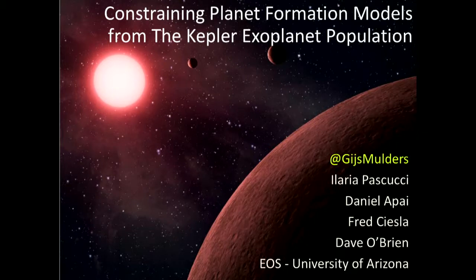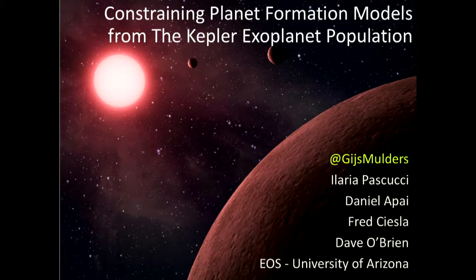Welcome everyone, also for the people coming in. My name is Gijs Mulders, I'm a postdoctoral researcher at the University of Arizona. Today I want to talk to you about the exoplanet populations discovered by the Kepler Space Telescope, how these exoplanet populations change our idea of what typical planetary systems look like, and how they force us to rethink how planets form and what it might imply for the composition of planets we can observe around other stars.